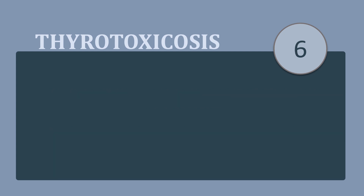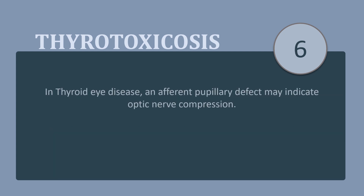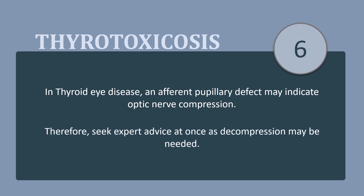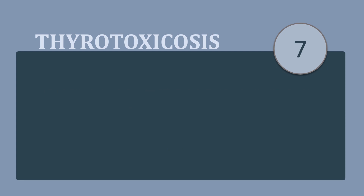Pearl 6: In thyroid eye disease, an afferent pupillary defect may indicate optic nerve compression. Therefore, seek expert ophthalmological advice immediately, as decompression of the optic nerve may be needed.